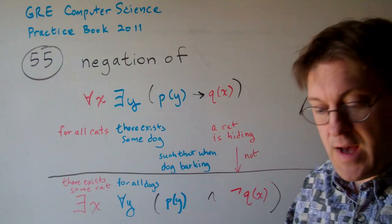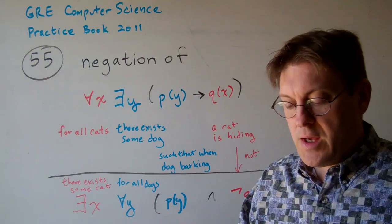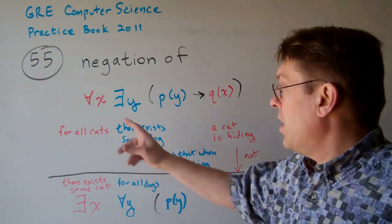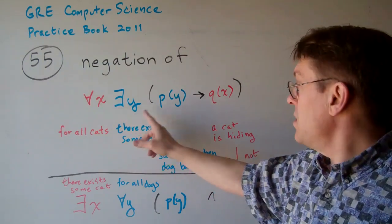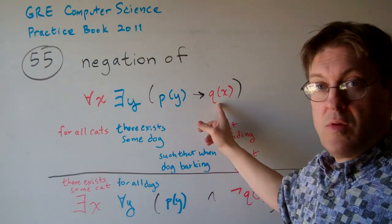Question 55. What's the negation of the predicate for all x there exists y such that p of y determines q of x?